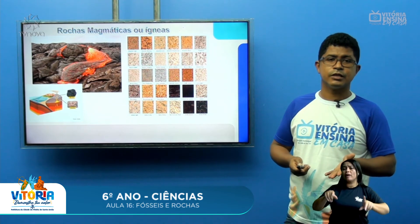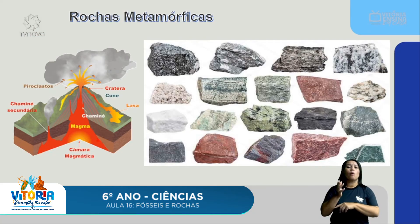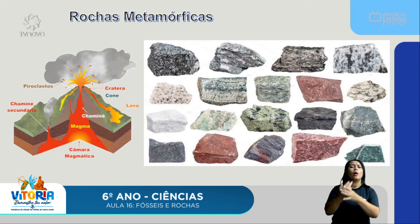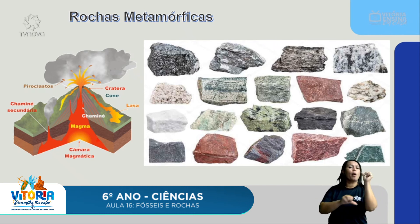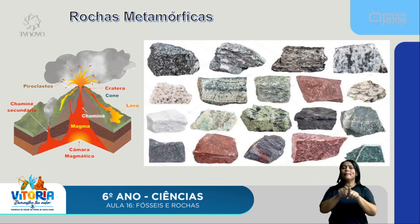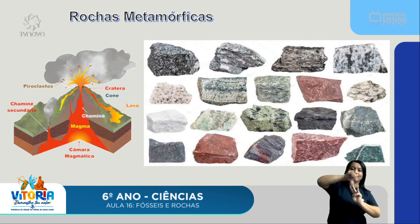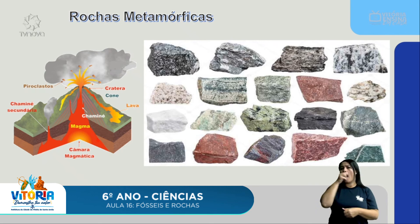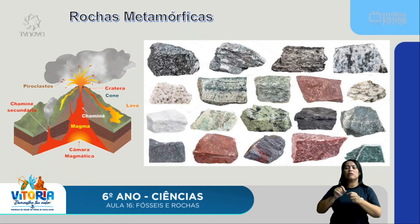As rochas metamórficas são muito parecidas com as rochas magmáticas ou ígneas. Como o próprio nome indica, o 'meta' vem de mudança. As rochas metamórficas podem, ao longo do tempo, virar rochas sedimentares, e rochas sedimentares podem virar rochas metamórficas. Rochas metamórficas podem virar rochas magmáticas, e vice-versa. A metamórfica é um tipo de transição entre a magmática e a sedimentar. Essa mudança ocorre ao longo de milhões de anos.